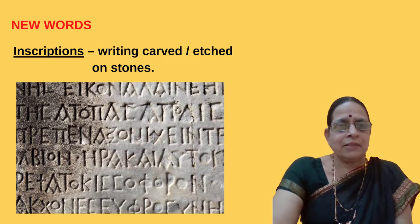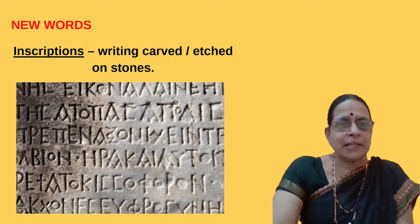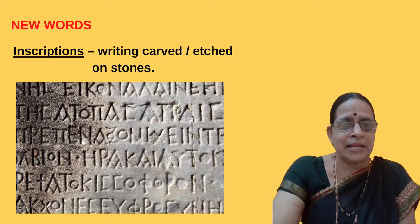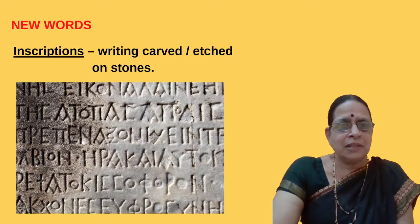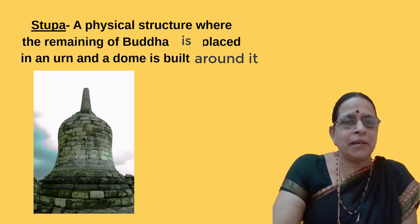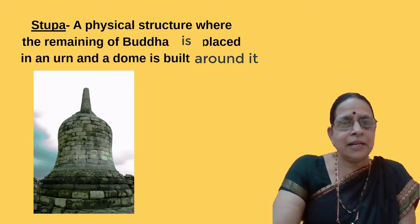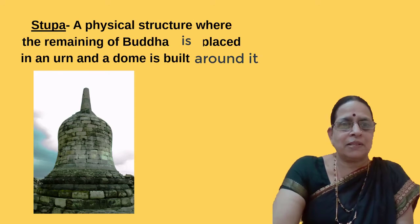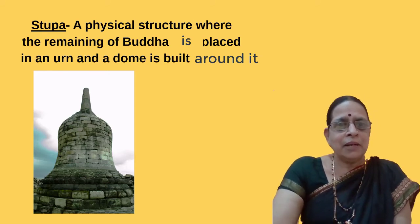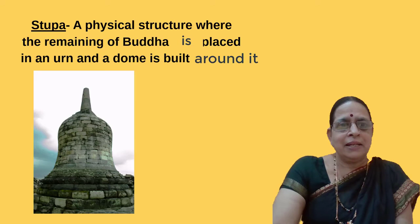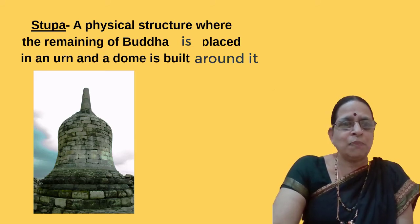Now let us learn about some new words. Inscriptions means writing carved or etched on stones — etched means engraved. Stupa means a physical structure where the remains of Buddha are placed in an urn. An urn is the container used to preserve the ash of a dead person. A dome is built around it.